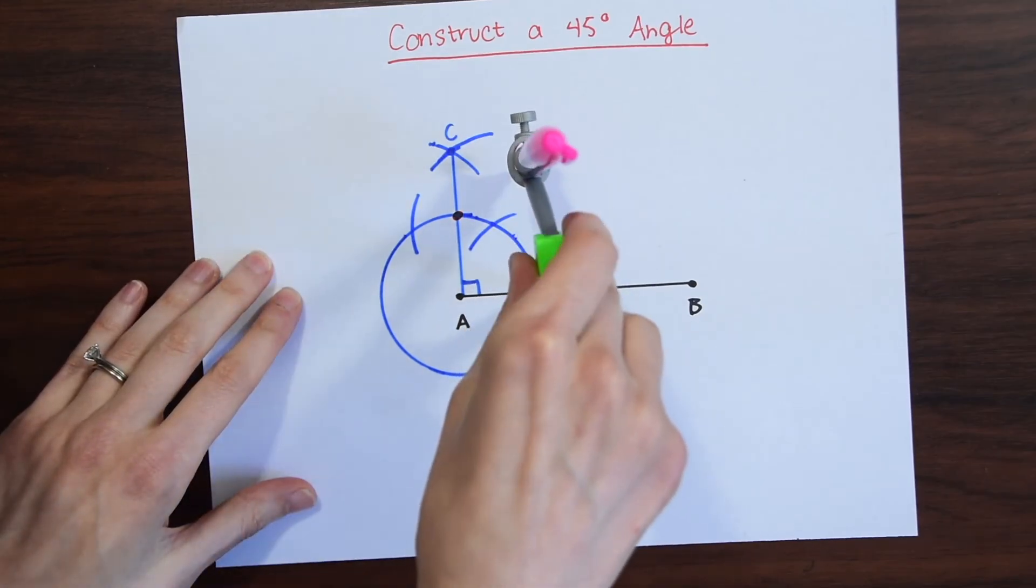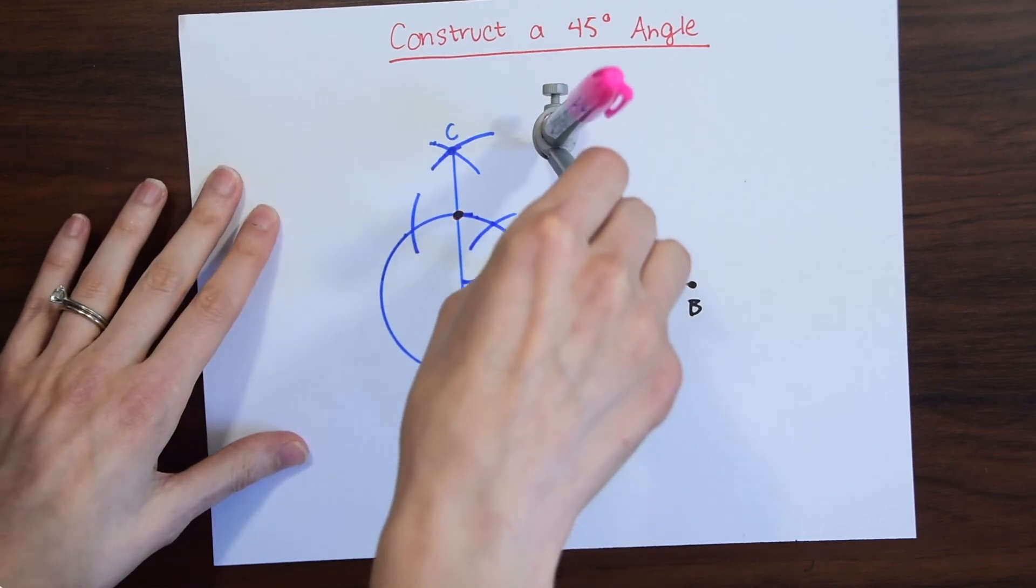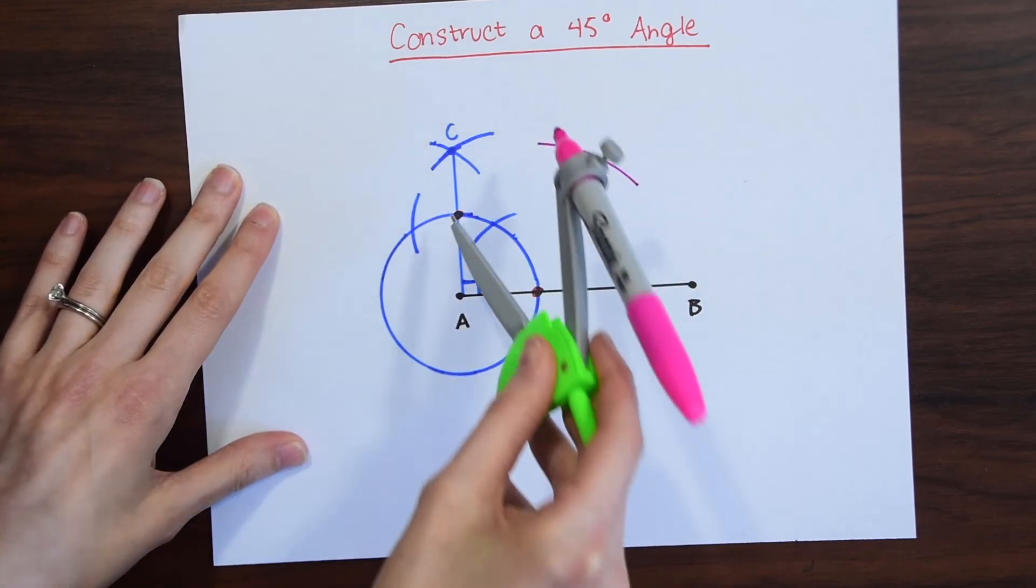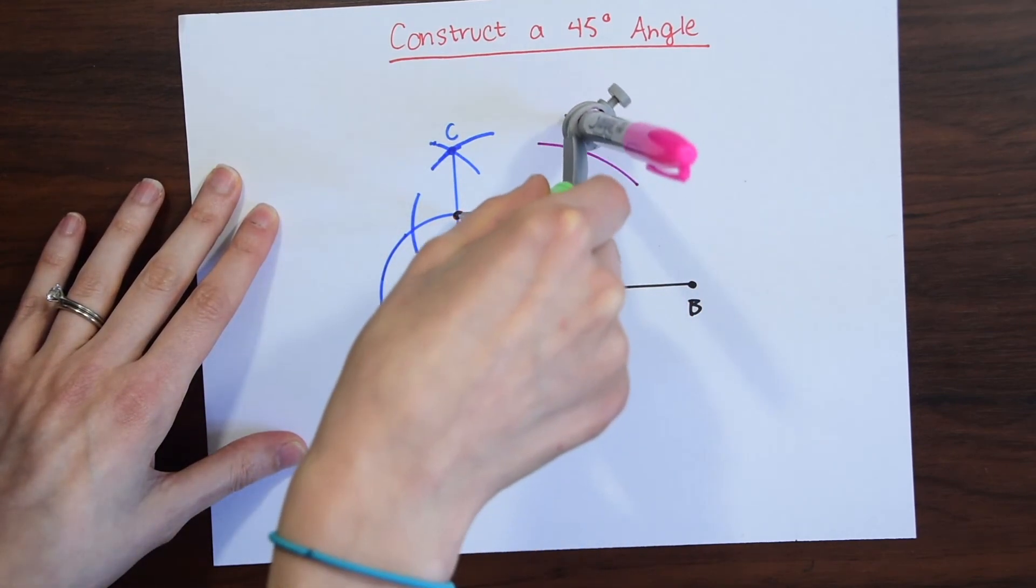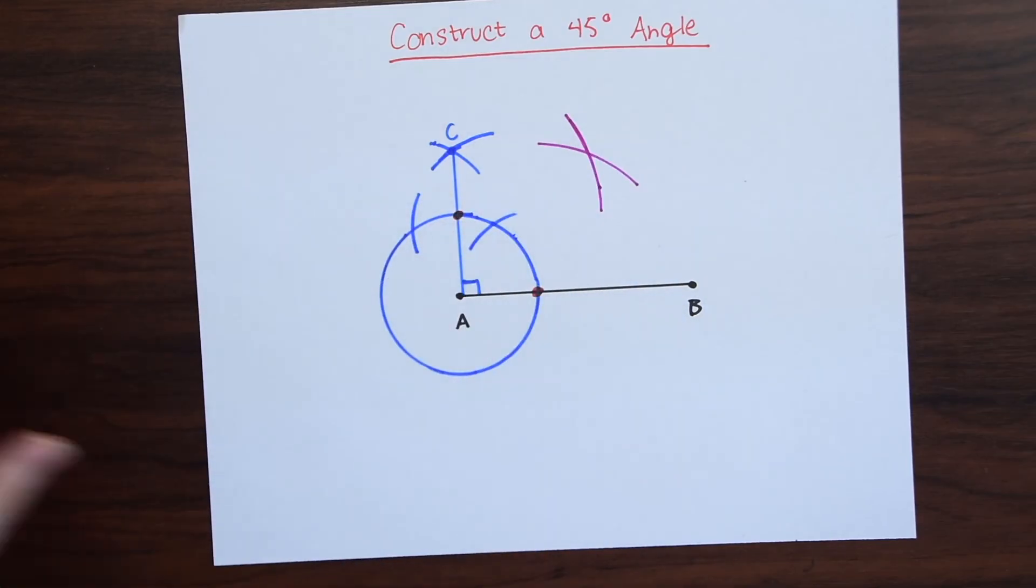We're going to take our compass, any size, and just swing it, and then take it to this other highlighted point. Swing it again. Notice we made a cross section.